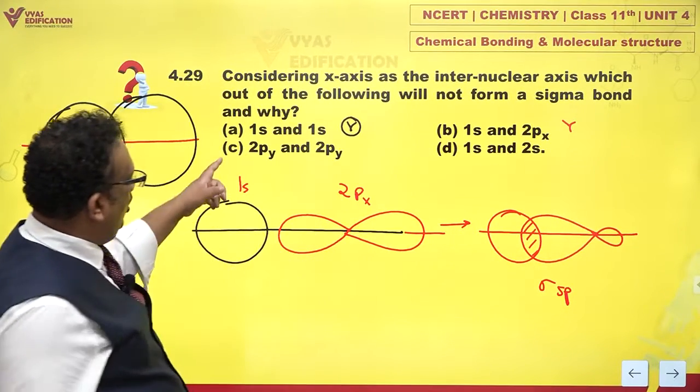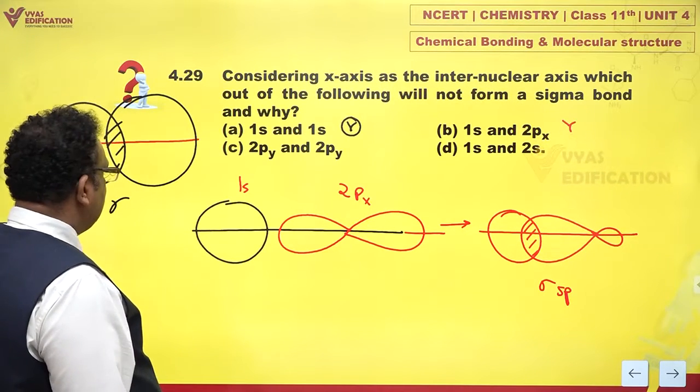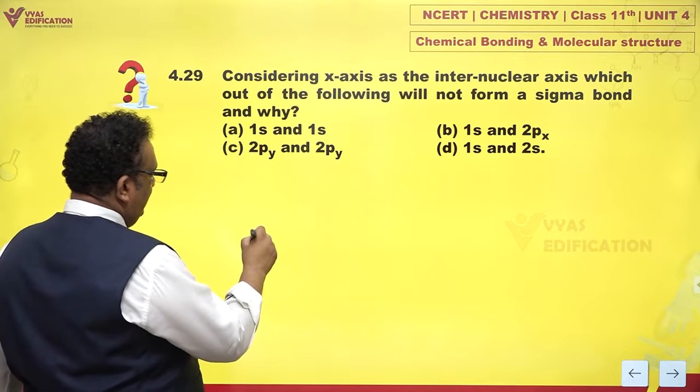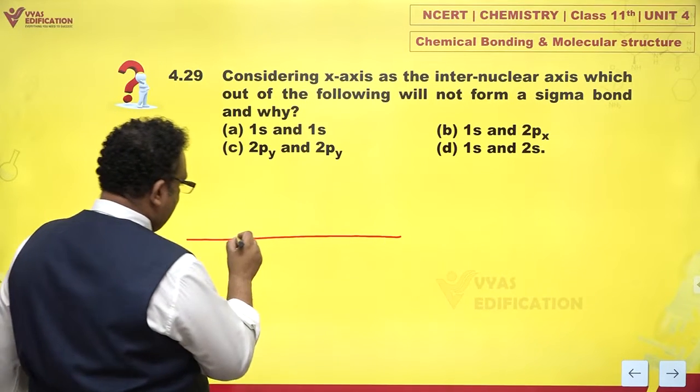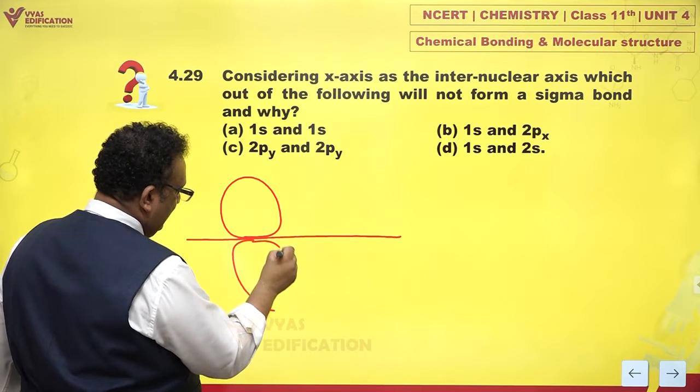And then we have c option, 2py and 2py. Now, how do we judge this? Let's see. This is x-axis. So, 2py is like this.